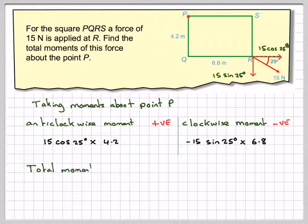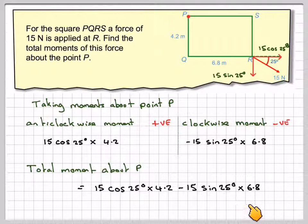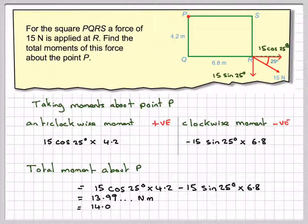The total moments about P are going to be 15 cos 25 times 4.2 minus 15 sin 25 times 6.8, which gives me 13.99 newton metres, which is equal to 14.0 newton metres, rounded off correctly to three significant figures.